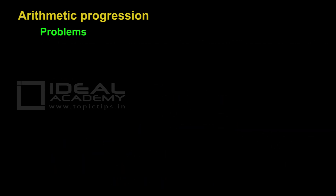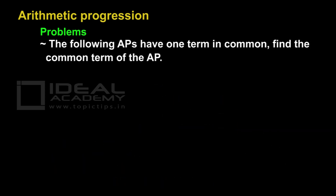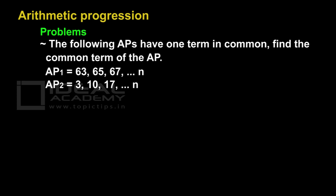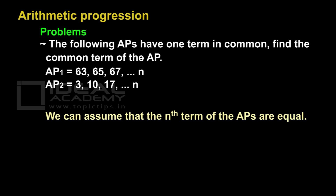The following two APs have one term in common. Find the common term. AP 1 is equal to 63, 65, 67, and so on up to N. AP 2 is equal to 3, 10, 17, and so on up to N. We can assume that the nth term of the two APs are equal. So the only thing we need to do is equate the two equations.